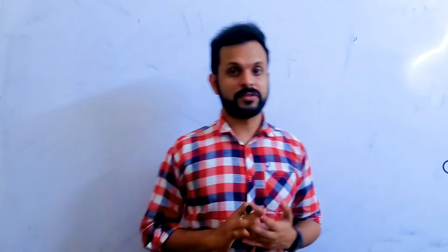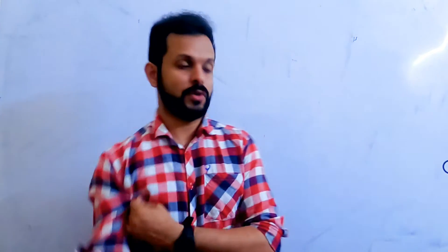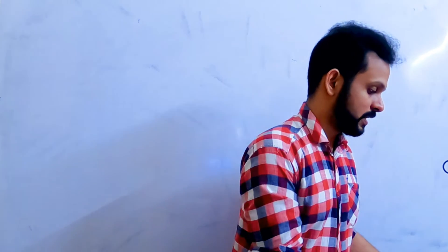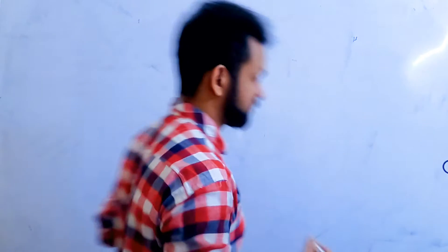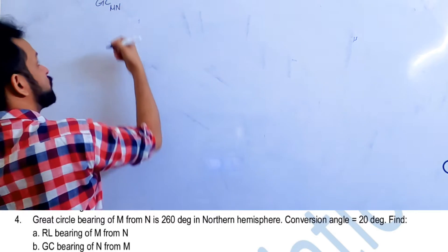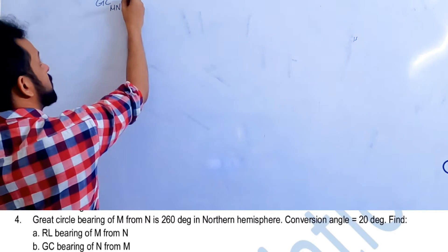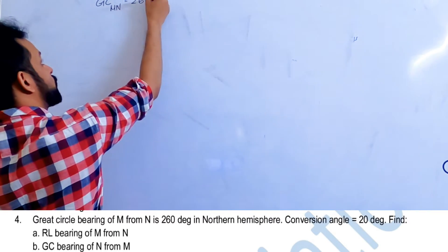Be very careful with convergency questions because it is easy but it can really trick you. Let's look at question number four. The great circle bearing of M from N is 260 degrees — written as GC MN = 260 degrees true.